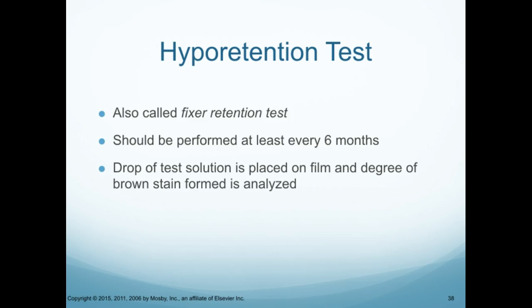Isn't it nice we don't have to do all this stuff anymore, but we have to learn about it. The hypo retention test, also called the fixer retention test, should be performed at least every six months. A drop of test solution is placed on the film, and the degree of brown stain formed is analyzed.